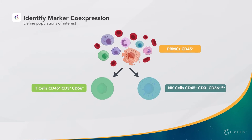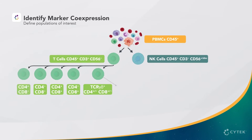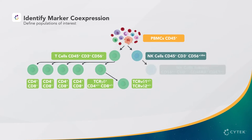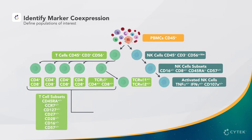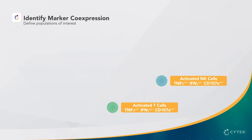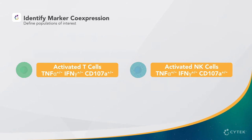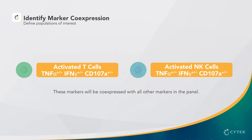As we build this detailed lineage tree, we can continue to assess other markers in our panel. For example, we want to evaluate the activation markers TNF-alpha, interferon-gamma, and CD107a on each subset. So those markers will be coexpressed with all others in the panel.